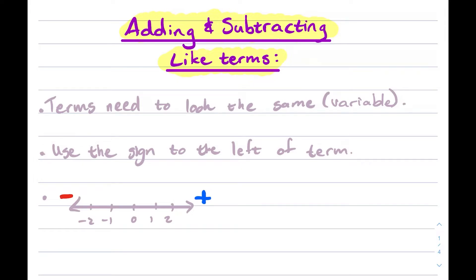The very first thing is your terms need to look the same. Your variables in your terms need to look the same and then they will be like terms. The second thing you can look at or remember is to use the sign to the left of the term. The sign to the left of the term is actually that term or variable's sign and that sign will tell you what to do with the variable, whether you need to add or subtract.